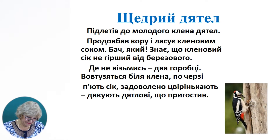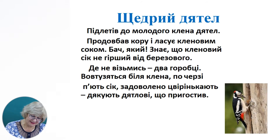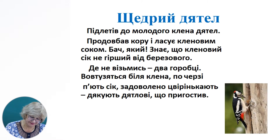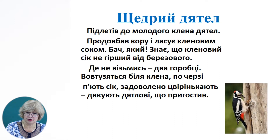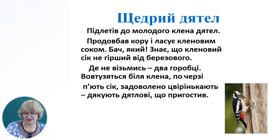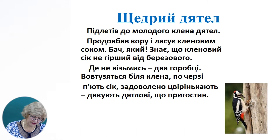Зараз ми на прикладі розглянемо текст-розповідь. Він називається «Щедрий дятел». Підлетів до молодого клена дятел. Продовбав кору і лакує клиновим соком. Бач, який знає, що клиновий сік не гірший від березового. Де не візьмись два горобці — поворушились біля клена. По черзі п'ють сік. Задоволено цвірінкають. Дякують, що пригостив.